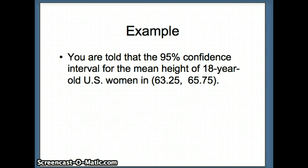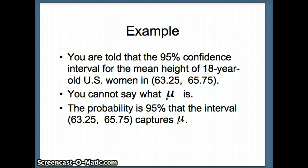So let's say, for example, you are told from a statistician that the 95% confidence interval for the mean height of 18-year-old US women is 63.25 to 65.75. What that means is he doesn't know what the exact value of μ is, but he is pretty sure that that value of μ is captured by that interval. The 95% gets at the likelihood that indeed that interval will capture μ. So we don't know what μ is, but the probability is 95% that that interval, 63.25 to 65.75, would indeed capture that true population mean for the entire group of 18-year-old US women.